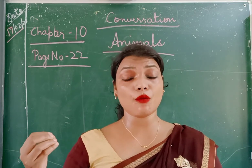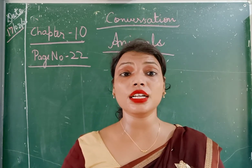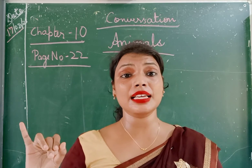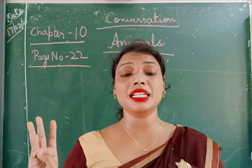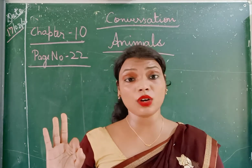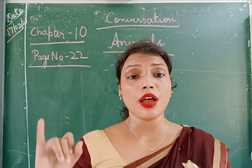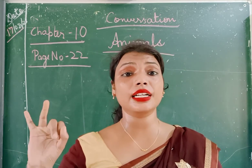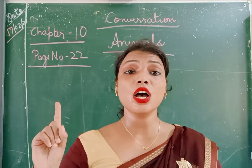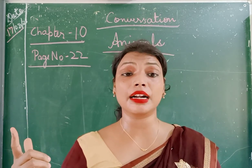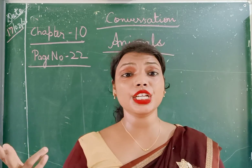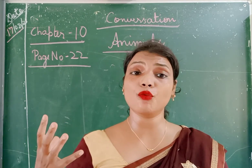Jo paani wala janwar hai — water animals, they are living inside the water; they can also live on land. There are three categories: wild animals, pet animals, and water animals. Wild animals — elephant, lion, giraffe, etc. Pet animals — dog, cat, rabbits, etc. Water animals — frog, tortoise, fish, octopus. So these are the water animals.